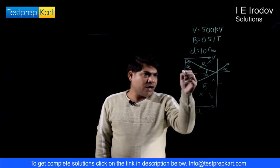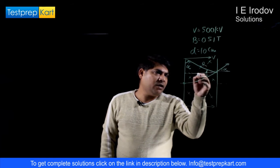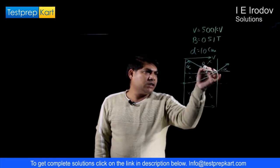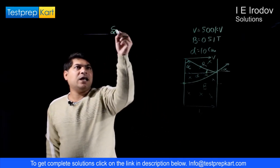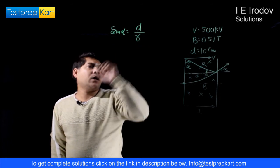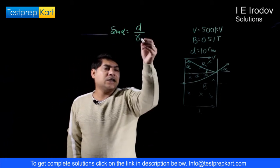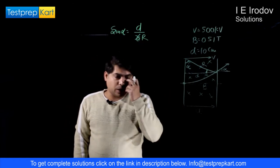So if you look at this triangle, this perpendicular side is D, hypotenuse is equal to R. So we can say from this triangle, sin alpha is equal to D upon R, where R is the radius of the path.